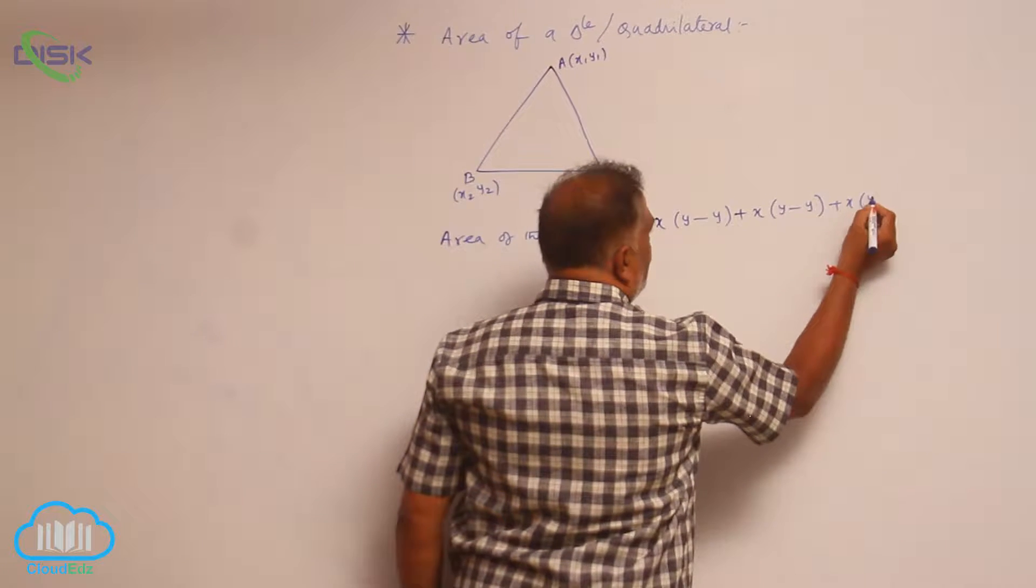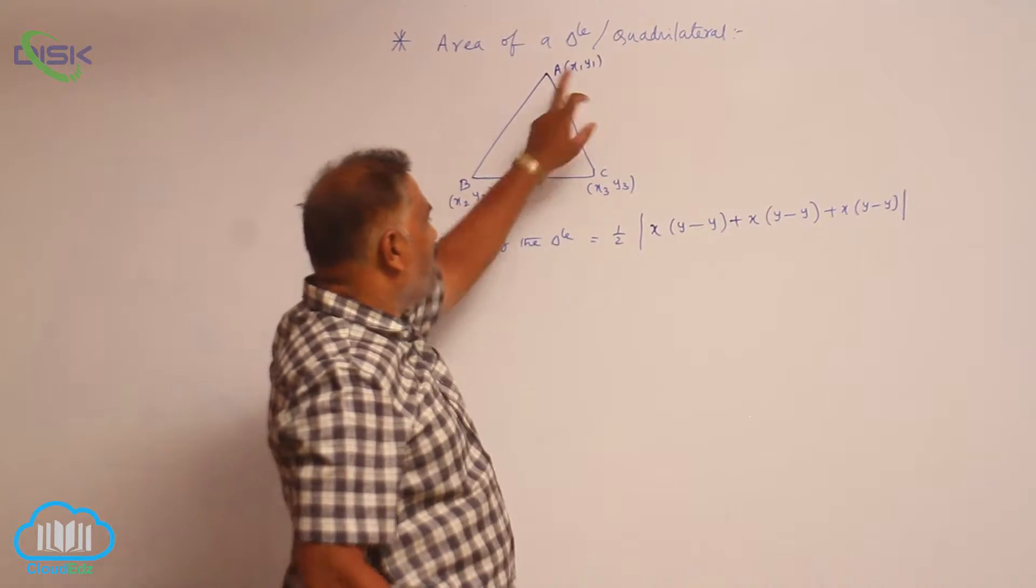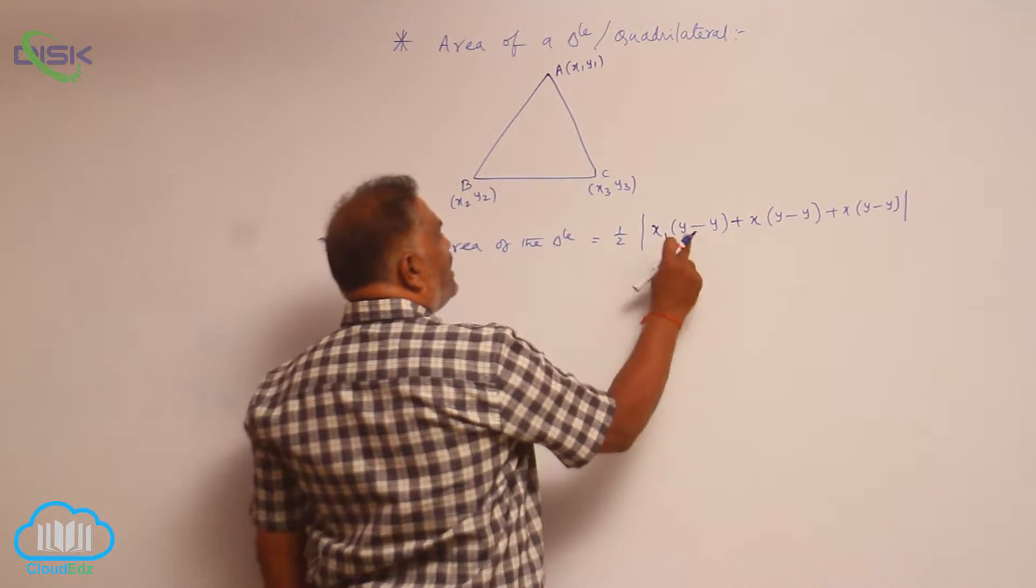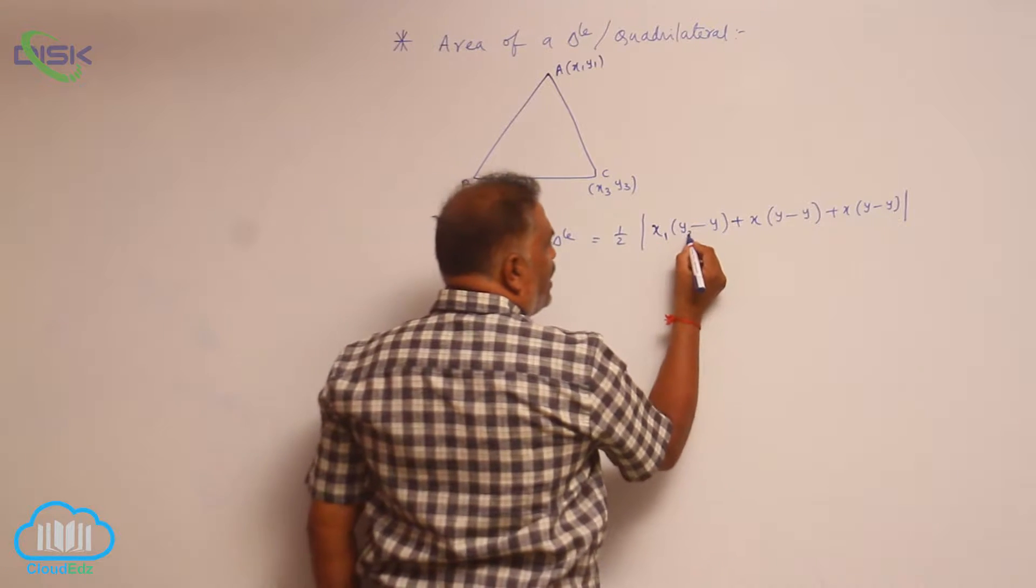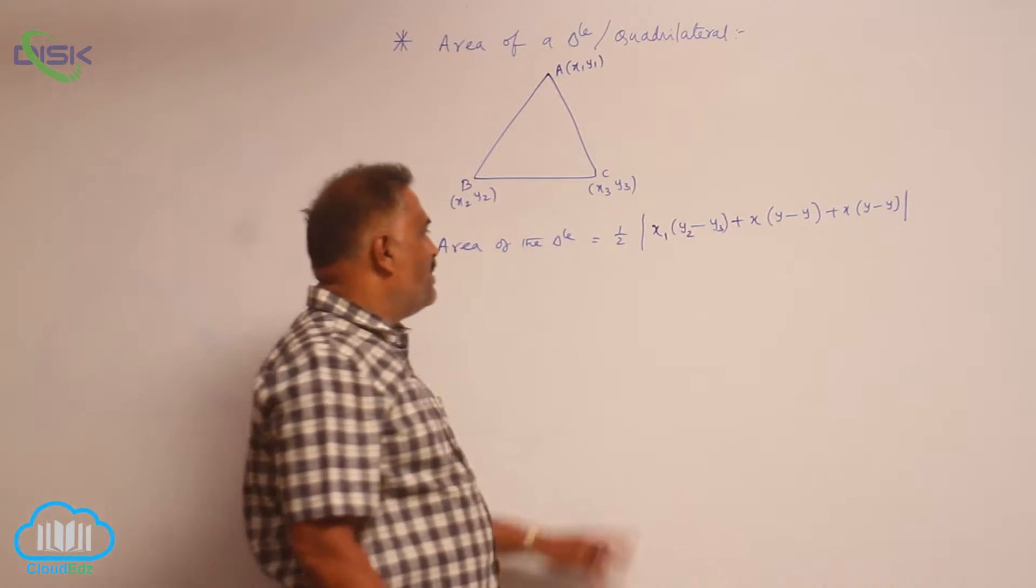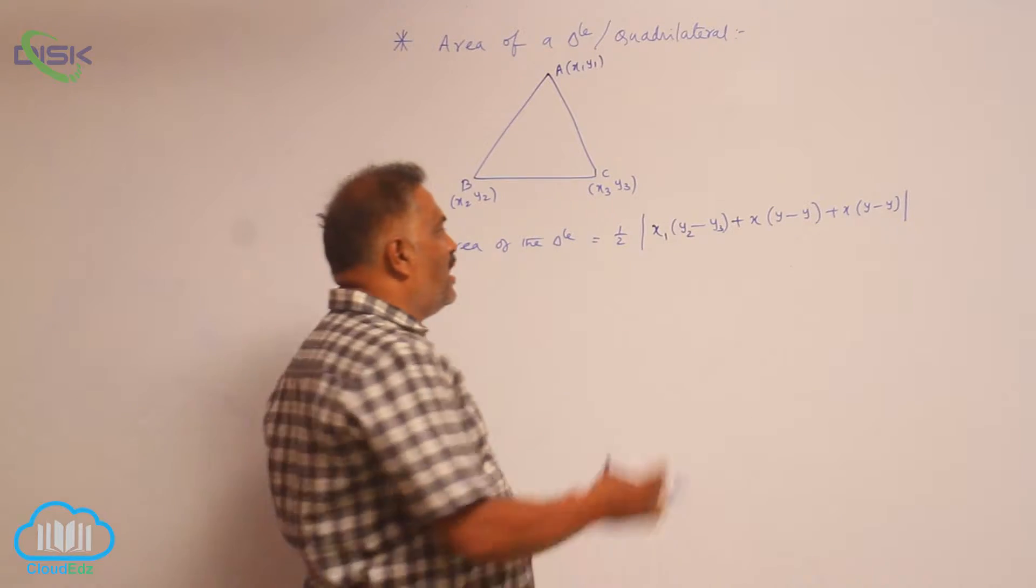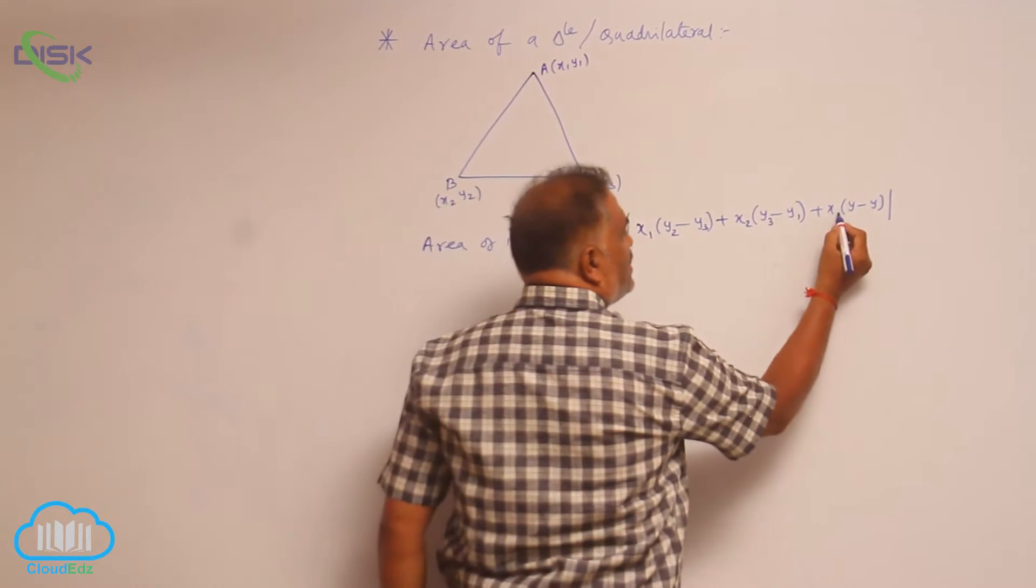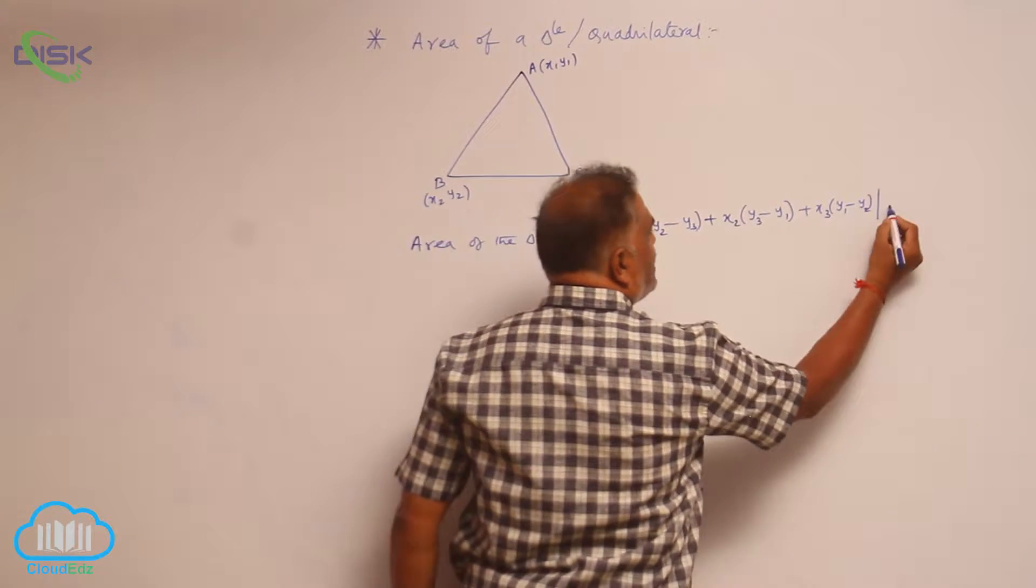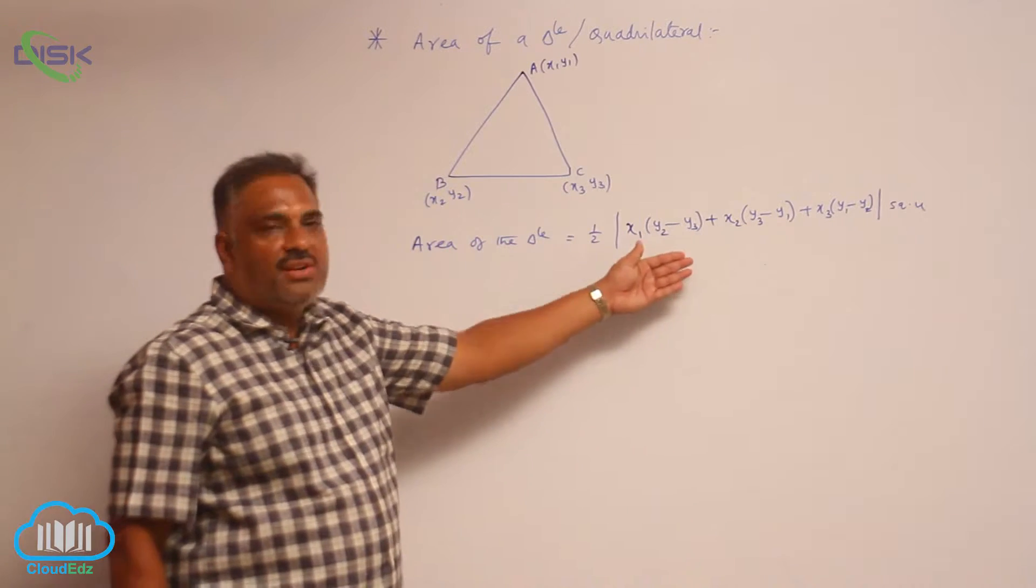Plus x into y minus y. Now start with x1, then y - leave this y1 and go in cyclic order: y2 minus y3. That means it is coming 1, 2, 3. Now follow the cyclic order: 1, 2, 3 means next comes 2, 3, 1. Next comes 3, 1, 2. This is a simple technique of learning area of the triangle.